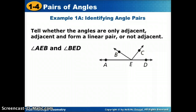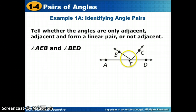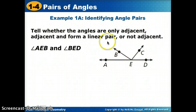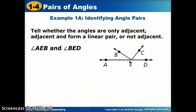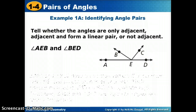Let's look at some examples. We need to tell whether angles are only adjacent, adjacent and forming a linear pair, or not adjacent. First, do they share a vertex? Both angles AEB and BED have E in the middle, so yes. They share ray EB, so they are adjacent. Now, are their non-shared sides opposite rays? EA goes straight to the left and ED goes straight to the right — so they are opposite rays. Therefore, they are adjacent and form a linear pair.